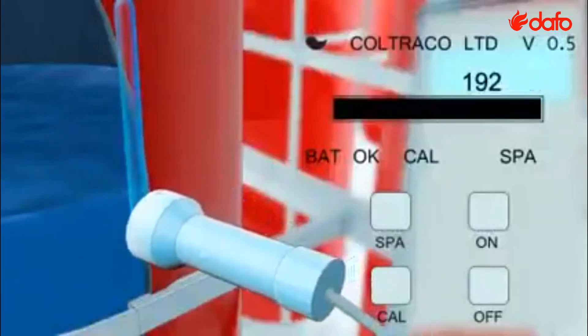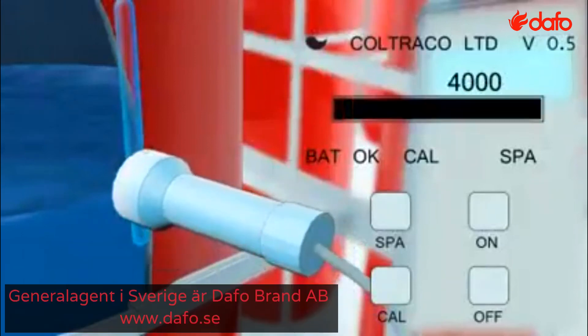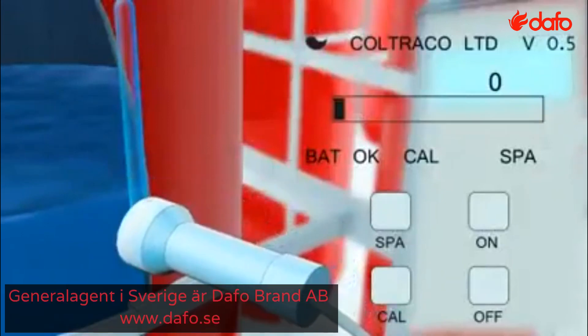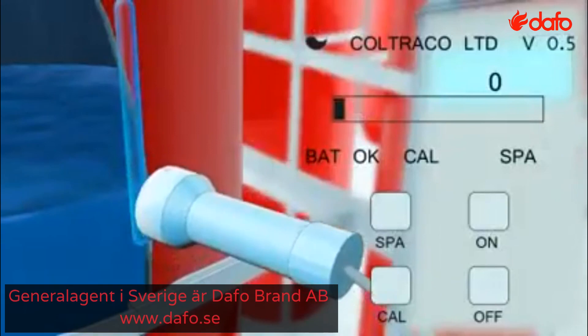The liquid level is the point between the bar graph at 100% and 0%. Continue to relocate the sensor until you find this point.